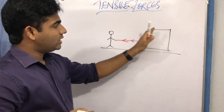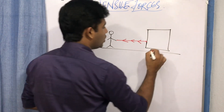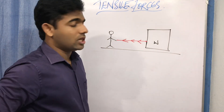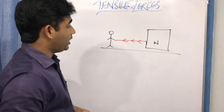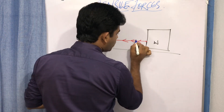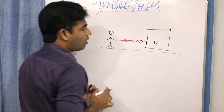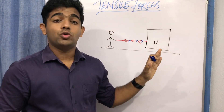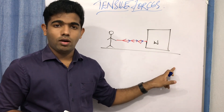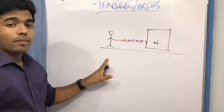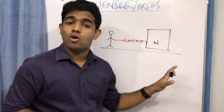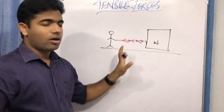Now, this wooden block has a weight, so it may not move — you can take it as a concrete block too. By Newton's law, there would be another force exerted by the wooden block back onto the rope itself. So there are two forces here: one is a force exerted by me on the rope, and another force exerted by the wooden block back onto the rope. Both forces act on the same object.